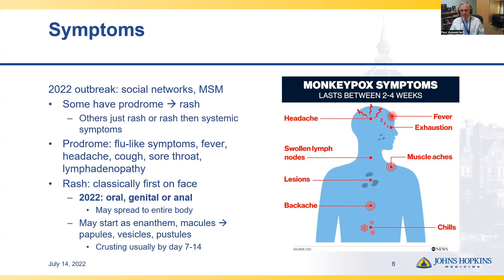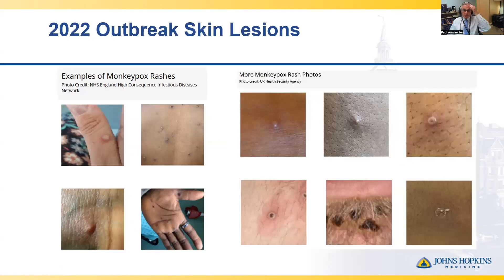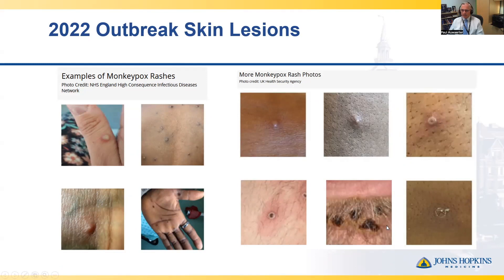Crusting typically occurs within a week or two if people have normal immune responses. Looking at pictures of the monkeypox skin lesions seen in the current outbreak, you can see that not everyone has the whole body covered. You can identify some classic pox-like vesicles and pustules, as well as some crusting, though the presentation does not seem as prominent as the severe African presentations.